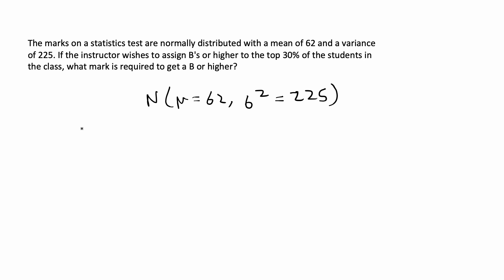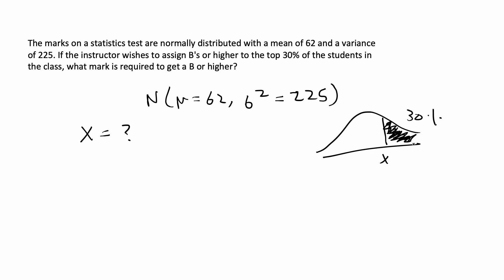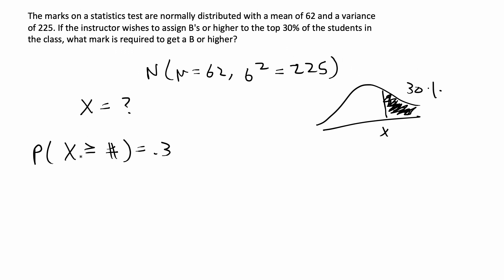If the instructor wishes to assign B's or higher to the top 30% of students, what mark is required to get a B or higher? We're given mean μ = 62 and variance σ² = 225, and we want to find the cutoff value x such that 30% of people who score at least x receive a B or higher. So we want the probability that X ≥ x to equal 0.3. Instead of x, I'm going to plug in the z-score formula, so z = (x − μ) / σ, and we want this to be greater than or equal to some number equaling 0.3.